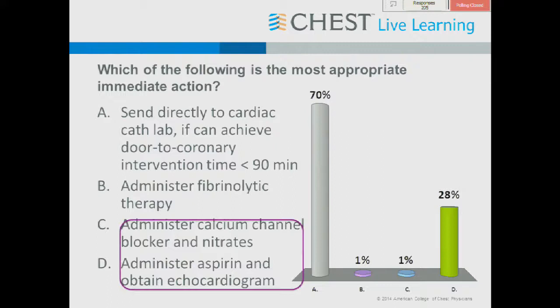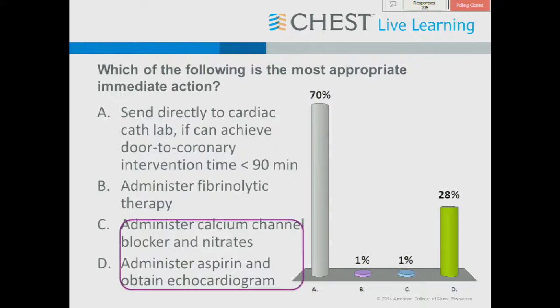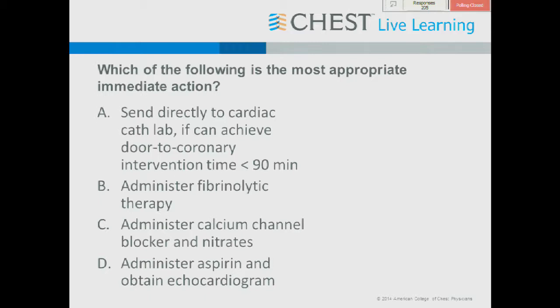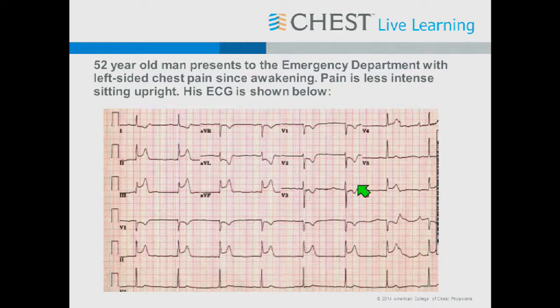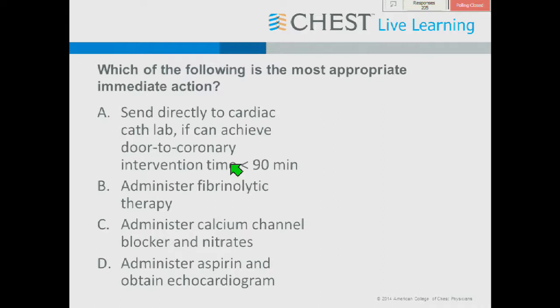About 70% chose A, which is the correct answer. Some were misled by the patient having slight improvement sitting up, which would be more typical of pericarditis. Looking at the EKG, this patient has dramatic, concave ST segment elevations in the inferior leads with reciprocal ST segment depressions — changes in a coronary distribution that are very atypical for pericarditis. Other atypical features are the reciprocal changes, which we don't see in pericarditis. This patient is having a STEMI and needs urgent reperfusion.